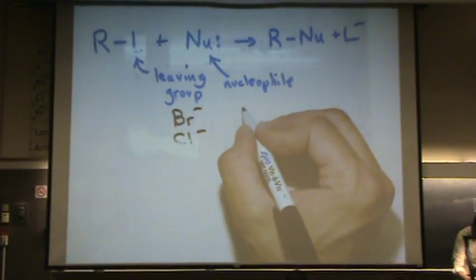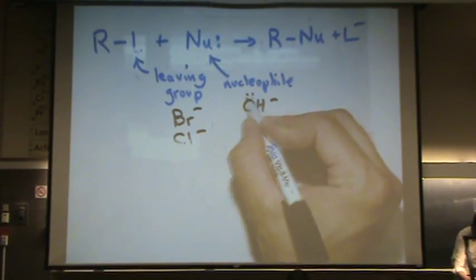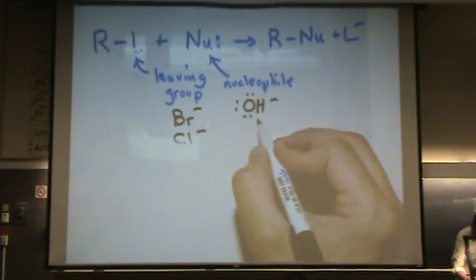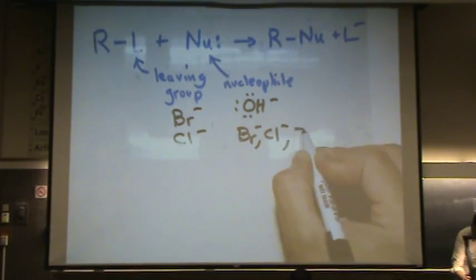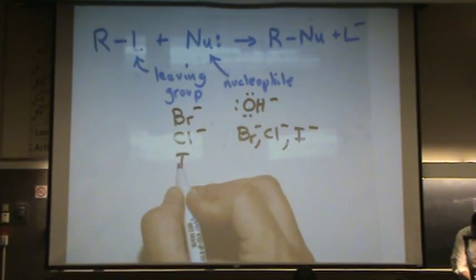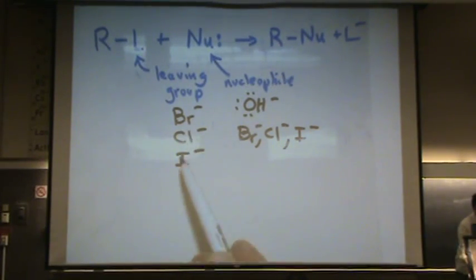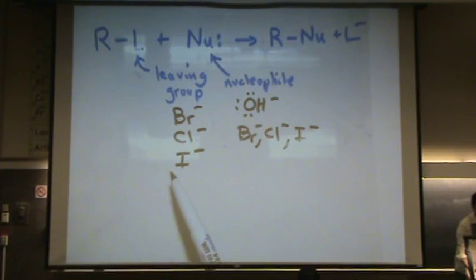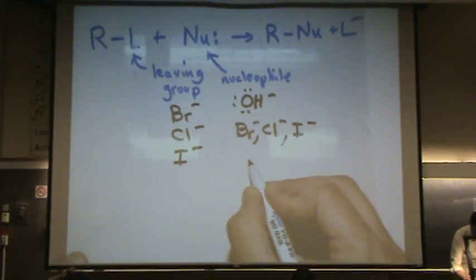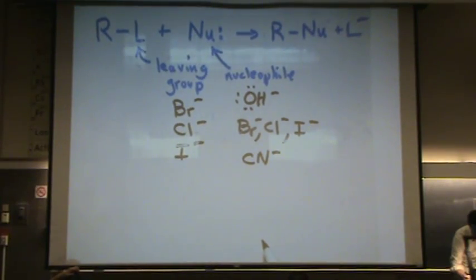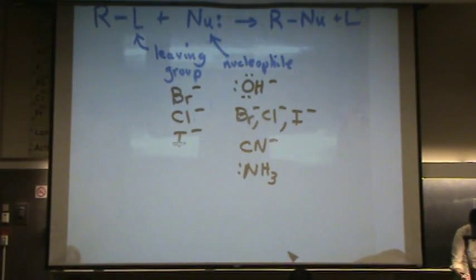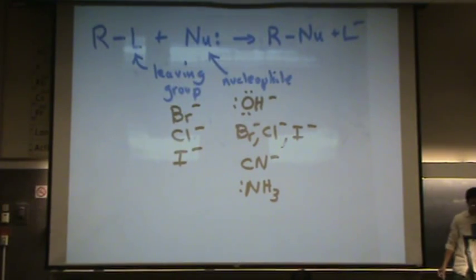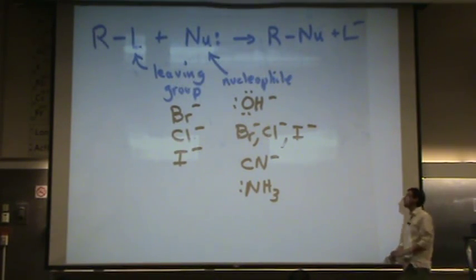Good nucleophiles are anything with a lone pair of electrons — so OH⁻ has lone pairs of electrons, and pretty much any halogen: bromine, chlorine, or iodine. Iodine can also be a good leaving group. Notice there's some overlap between what can be a leaving group and a nucleophile. Other good nucleophiles include things with negative charges or a lone pair of electrons, like ammonia. As far as we're concerned, the leaving group is mostly going to be a halogen.